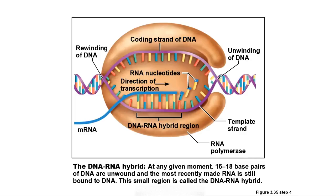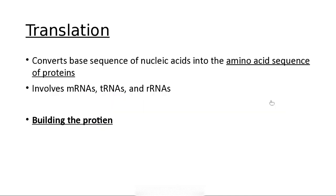Ribosomal RNA is part of the ribosome that helps translate the message into an actual protein. Transfer RNAs bind to amino acids using codons — three bases in a row — and put the amino acid in the right place. Translation is the actual formation of the protein. With DNA we copy both sides, but with RNA we only copy one side, and instead of thymine (T) we have uracil (U). Transcription copies the needed section, and translation converts the base sequence into a protein.